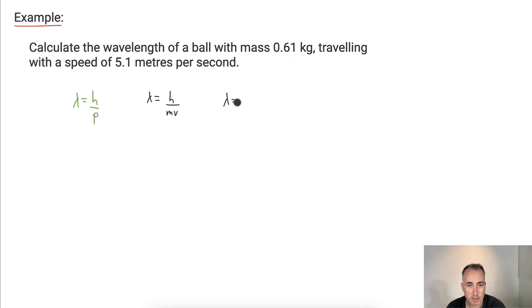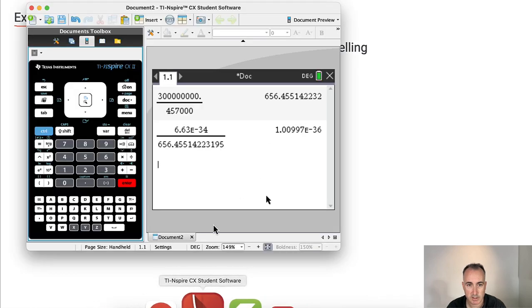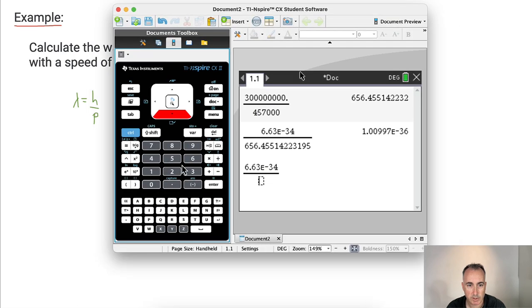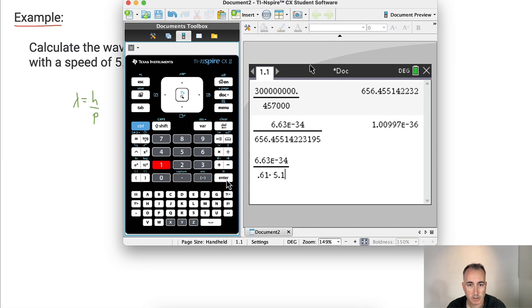So now I can put in all my numbers. So lambda equals 6.63, this is h by the way, times 10 to the minus 34 joules seconds, all that over the mass, which is 0.61 kilograms, all that times the speed of 5.1 meters per second. And there's no conversions needed. Those are nice numbers. Away I go. So I'll just do a fraction. And I'll do the same thing. So 6.63 times 10 to the minus 34, all that over 0.61 times 5.1. So there we go. I've got 2.131147.